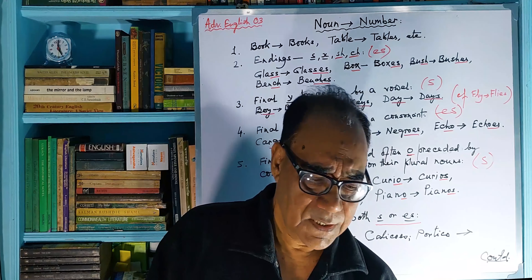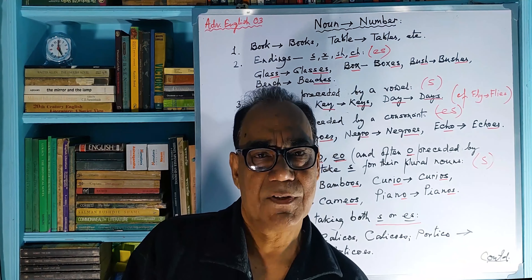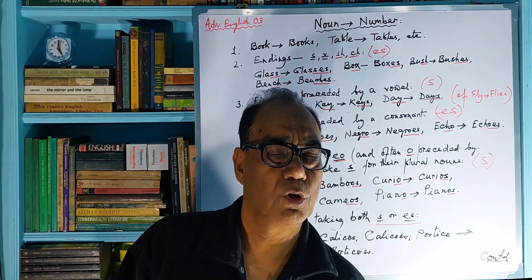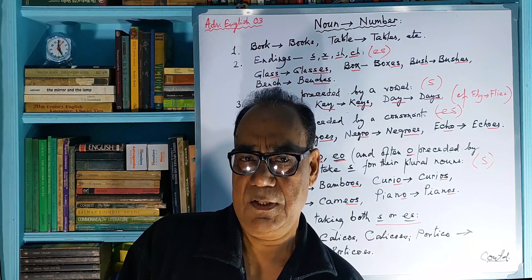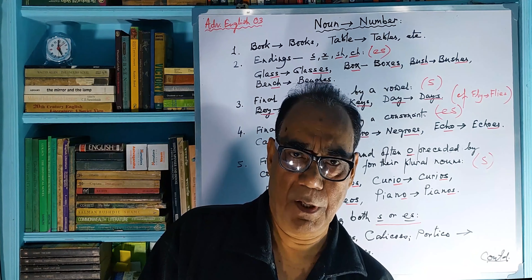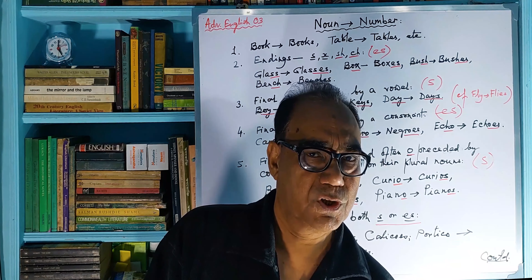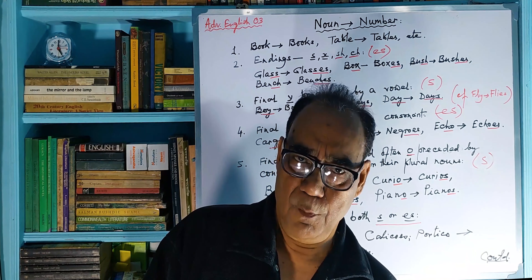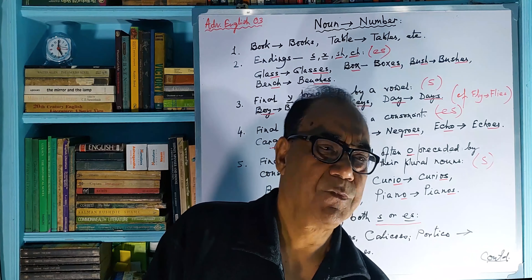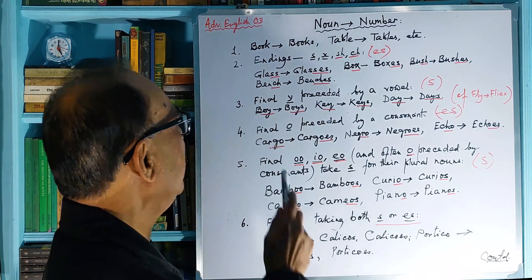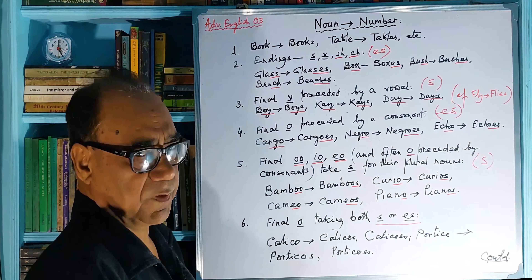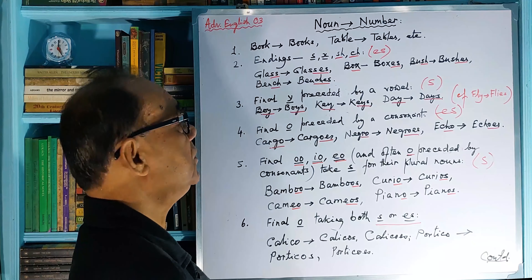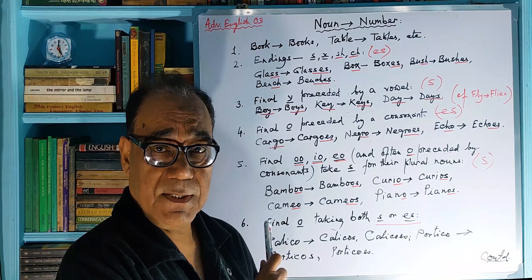Now, let's see a few rules on how to make a selection — whether you would be using S or ES. There are several rules or formulae. So let's see, we have six rules here. There are more than six rules and we will come to them later, but at present we can discuss these six rules.